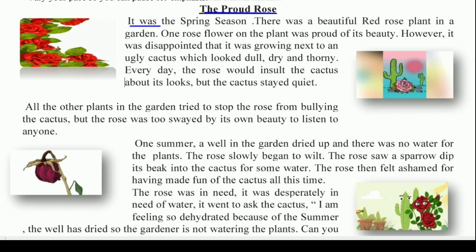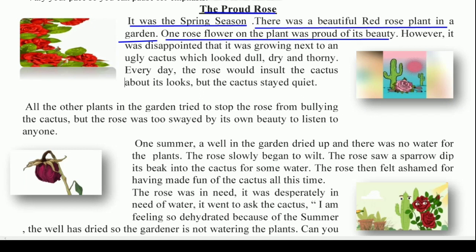It was the spring season. Yeh basant ka mausam tha. There was a beautiful red rose plant in a garden. Ek bagiche mein ek bahut hi sundar laal gulaab ka paudha tha. One rose flower on the plant was proud of its beauty. Unmai se ek sundar gulaab ka phool, woh apne beauty par, apni sundarta par bhoat itarata tha.